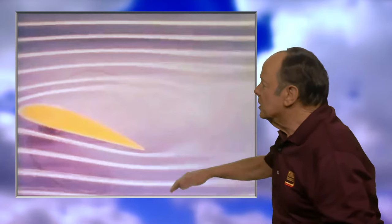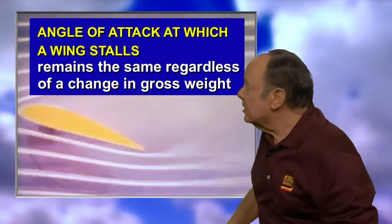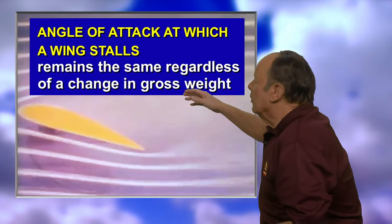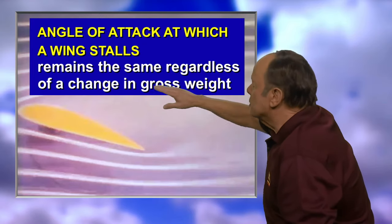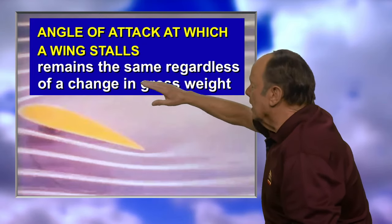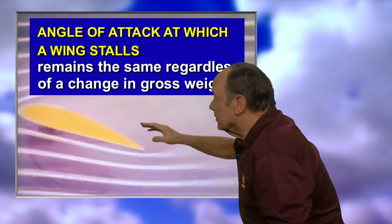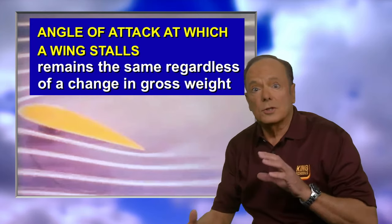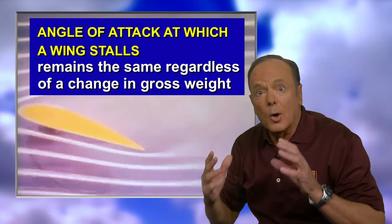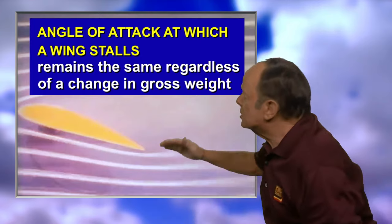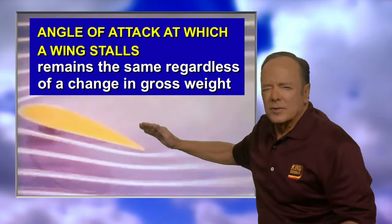What if you change the gross weight of the airplane? What would that do to the angle of attack at which an airplane stalls? The answer is nothing. The angle of attack at which an airplane stalls remains the same regardless of a change in gross weight. The wing will reach that angle of attack at different speeds based on its weight, but it always stalls at the same critical angle of attack.